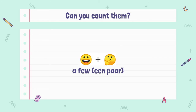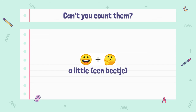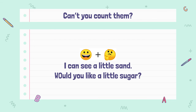'A few' means 'een paar.' Can you count them? Then you can say a few. For example: I can see a few boats. Can I buy a few flowers? So 'een paar boten,' 'een paar bloemen.' If it's only few, then it means 'weinig.' If you can't count them, we use 'a little,' which means 'een beetje.' So: I can see a little sand. Would you like a little sugar? 'Een beetje suiker,' 'een beetje zand.'